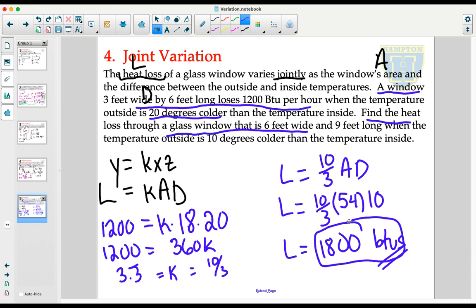We lost 1800 BTUs, given the circumstances of the window and the difference in the temperature. Joint variation, exactly like combined, exactly like inverse and exactly like direct. You start by writing yourself a generic equation. You use the information provided to figure out what K is, our constant of variation, and then you use that number to determine another value of that dependent variable.